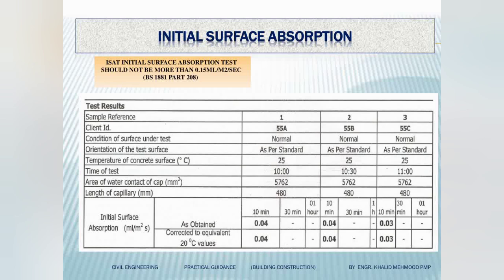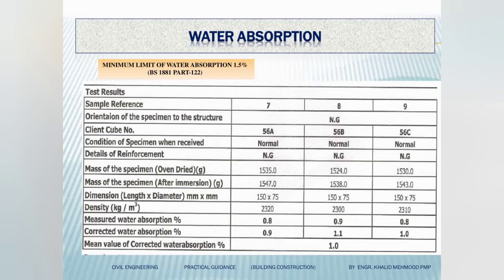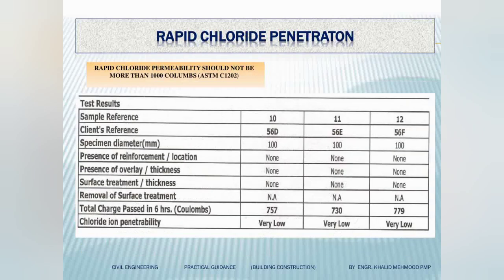Then the durability tests. The initial surface absorption test (ISAT) should not be less than 0.15 ml per square meter per second. The next hardened concrete test is water penetration — it should be less than 8 mm. Then water absorption, which should be less than 1.5 percent. This is for substructure concrete. And the RCP — rapid chloride penetration — should be less than 1000 coulombs. It is a durability test for hardened concrete.